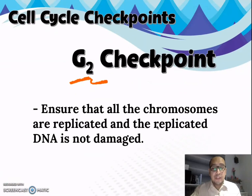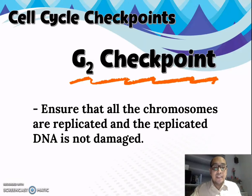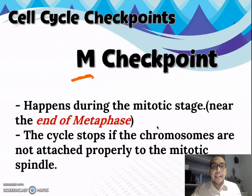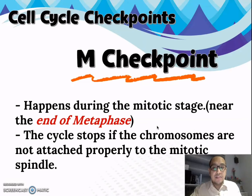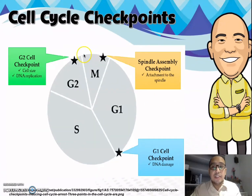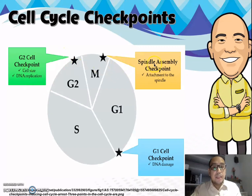For the second checkpoint, the G2 checkpoint, it ensures that all chromosomes are replicated and the replicated DNA is not damaged. The third checkpoint is the M checkpoint, which happens during the mitotic stage near the end of metaphase. The cycle stops if the chromosomes are not attached properly to the mitotic spindle or spindle fibers. This is illustrated as: the G1 checkpoint checks for DNA damage, the G2 checkpoint checks cell size and DNA replication, and the M checkpoint — or spindle assembly checkpoint — checks attachment of spindle fibers to chromosomes.